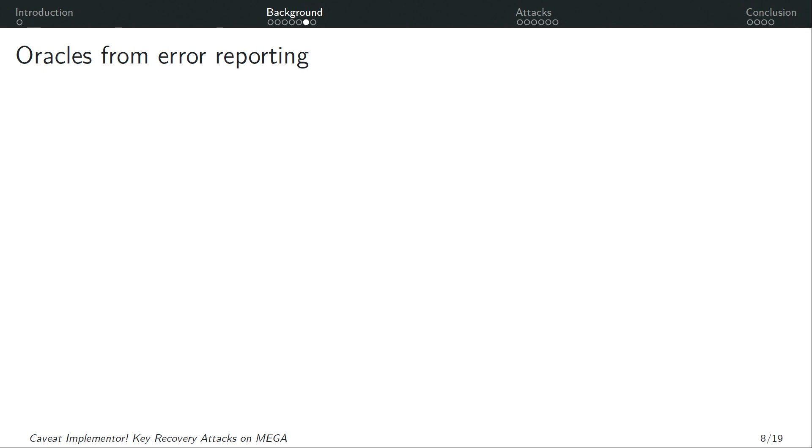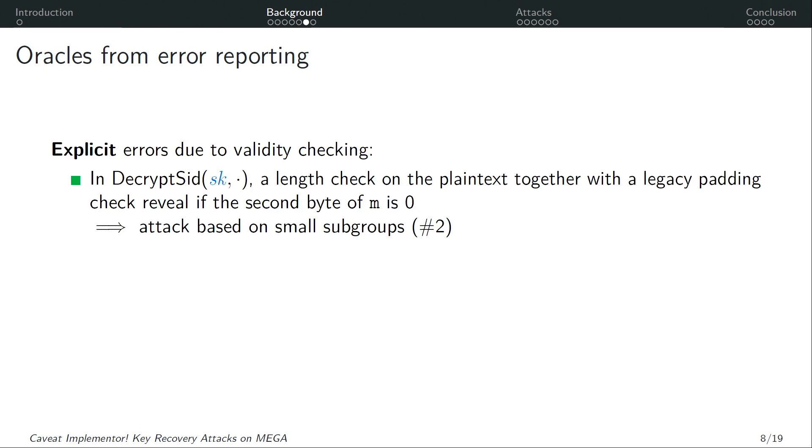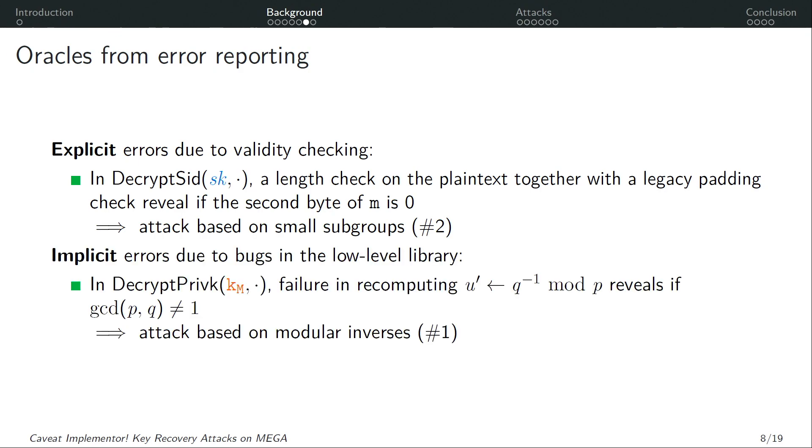For our attacks we are interested in what happens when MEGA servers maliciously change the inputs that go into this MegaDeck function. So I will zoom in a bit on what happens within this function. So as I mentioned we have these two steps. First we have the AES ECB decryption which retrieves the secret RSA key and then the secret RSA key is used to decrypt the RSA ciphertext. The key issue here is that both of these steps rely on validity checking of the decrypted values and return distinguishable errors to the server. We rely on both explicit and implicit errors. So first explicit errors arise from this validity checking. In particular in the second step there is a length check on the plaintext which together with the legacy padding check reveals if the second byte of the plaintext is zero and we use this in our second attack.